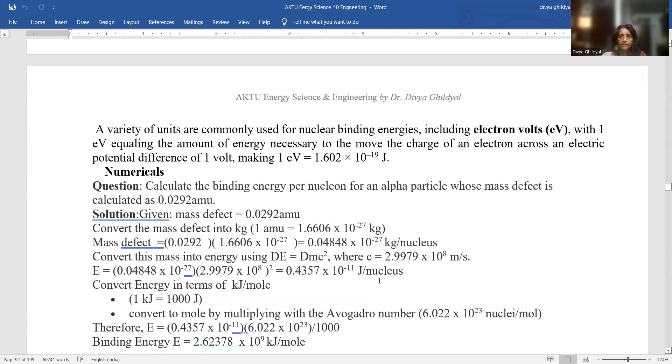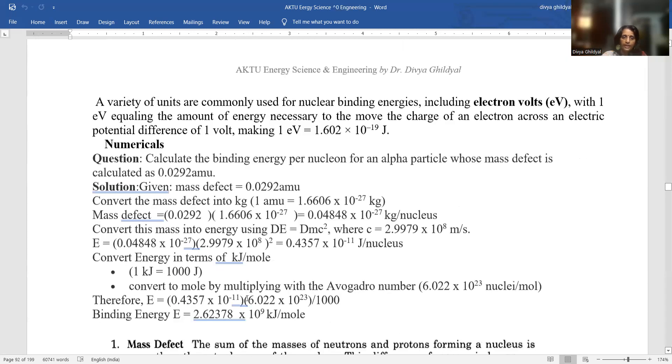Very simple numericals are asked. Calculate the binding energy per nucleon for an alpha particle whose mass defect is calculated as 0.0292 atomic mass unit. One atomic mass unit is equal to 1.66 into 10 to the power of minus 27 kg. Mass defect comes out as 0.0292 into 1.66 into 10 to the power of minus 27 kg. This mass gets converted into energy that is mc squared where c is velocity of light. So it becomes this value into c squared and you get the answer.